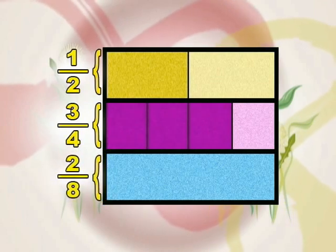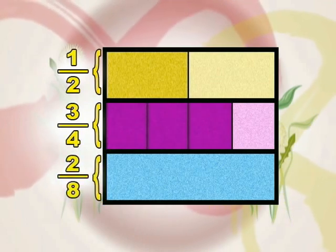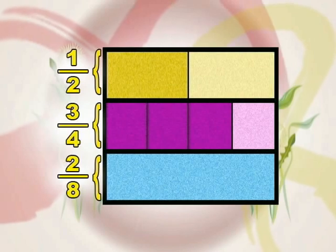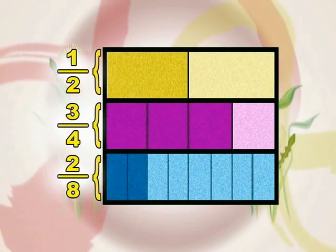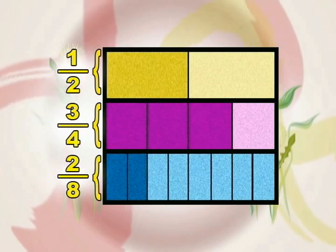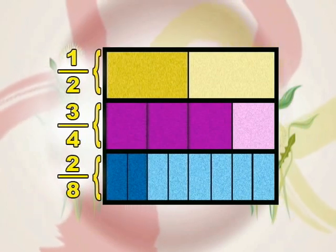Then to show two-eighths, we fold the third strip of paper to show eight equal parts. We then draw a line along the crease and shade two parts to show two-eighths.